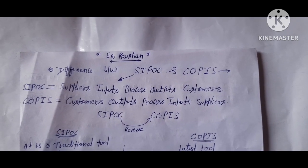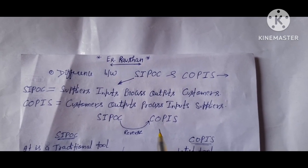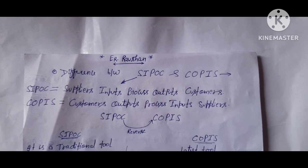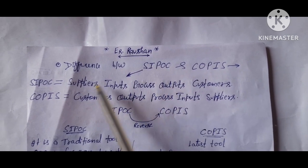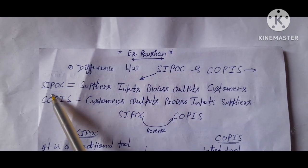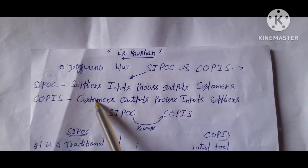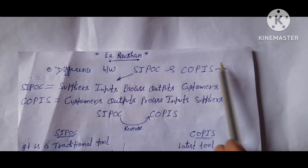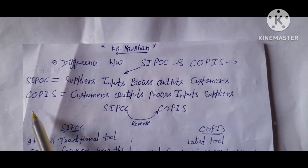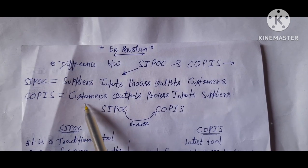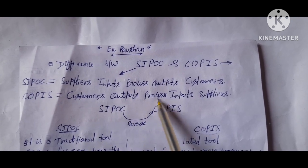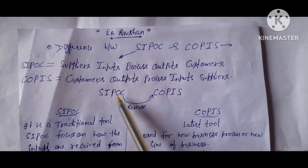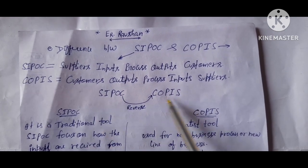Today we are talking about an interesting tool: SIPOC and COPIS. SIPOC means Supplier, Input, Process, Output, Customer. The second one is COPIS: Customer, Output, Process, Input, Supplier.